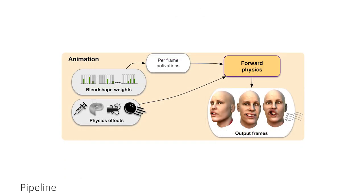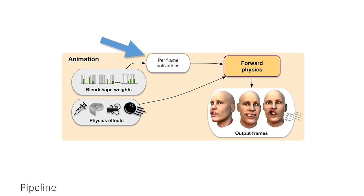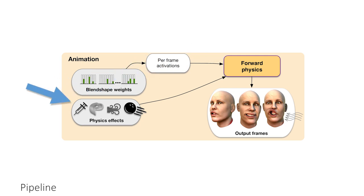The animation stage takes as input a temporal series of blend-shaped weights that are mapped to per-frame muscle activations. We use this information to apply forward physics simulation to compute dynamic face articulations. External forces such as gravity or object collisions, as well as other physics-based interactions, can be incorporated in the simulation to support a wide range of dynamic effects. The end product of this stage is an animation sequence.